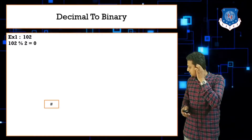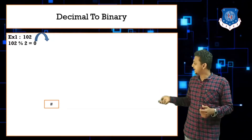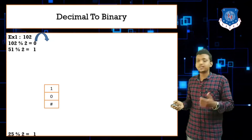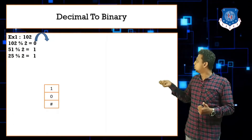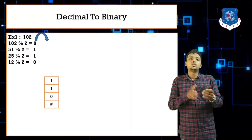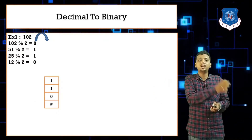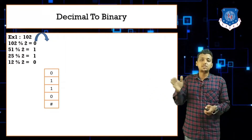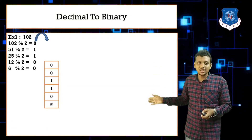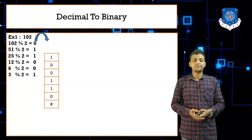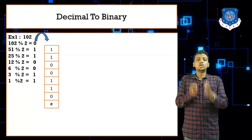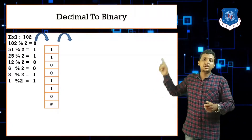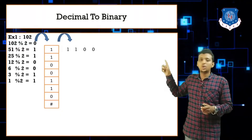102 mod 2 = 0, push 0. 51 mod 2 = 1, push 1. 25 mod 2 = 1, push 1. 12 mod 2 = 0, push 0. 6 mod 2 = 0, push 0. 3 mod 2 = 1, push 1. 1 mod 2 = 1, push 1 — stop here. Now pop all elements: 1, 1, 0, 0, 1, 1, 0.